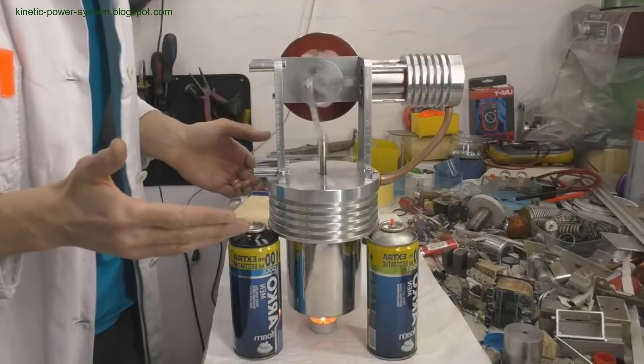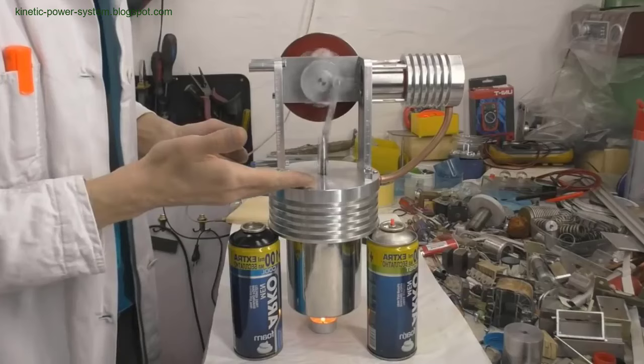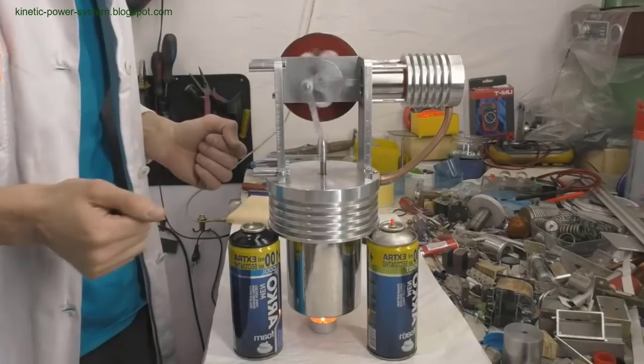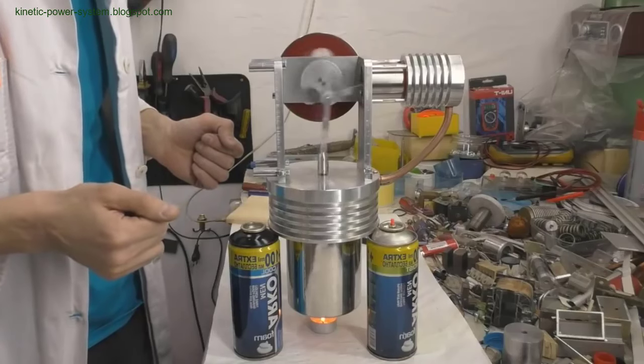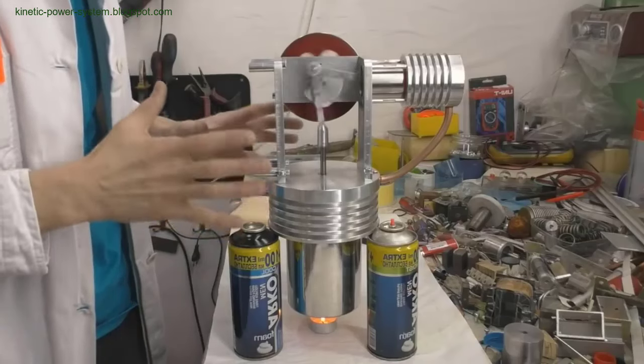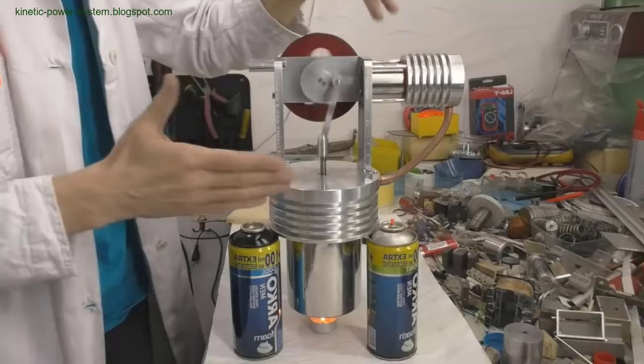My model, made from a stainless steel mug with thin walls, allowed for efficient heat transfer. The engine's performance at relatively low temperatures suggested good assembly quality, with tight air retention and minimal mechanical friction. This experiment highlighted the potential of Stirling engines to operate efficiently even with low-grade heat sources, such as small candles or hot water.